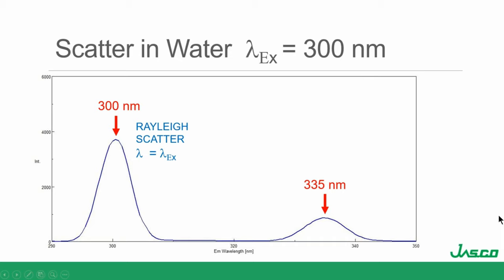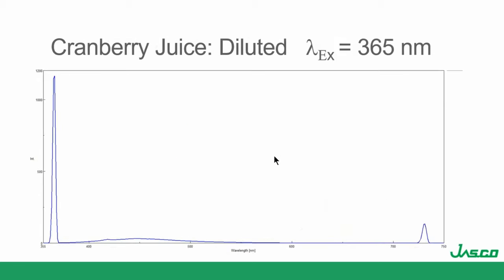At 600 nm is the second order Rayleigh scatter. And there's also the Raman band — less intensity, but still quite prominent. Now let's look at a real sample — I happen to have some cranberry juice available. Here is an emission spectrum exciting at 365 nm, and several bands should stand out.